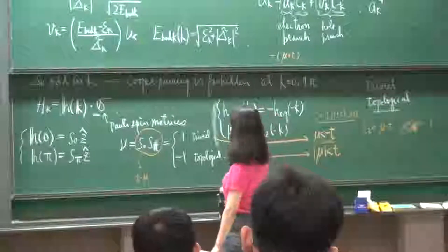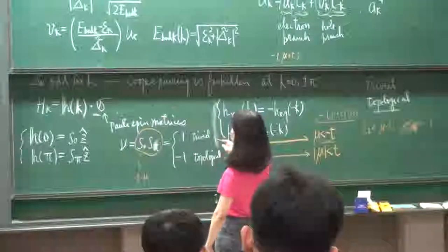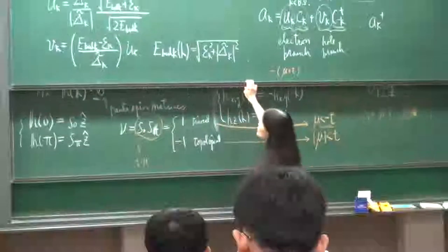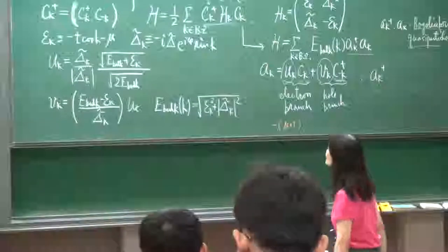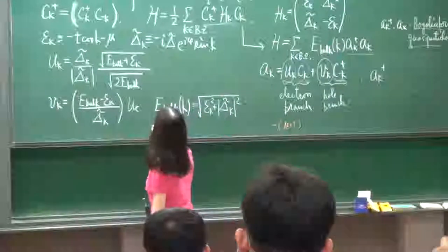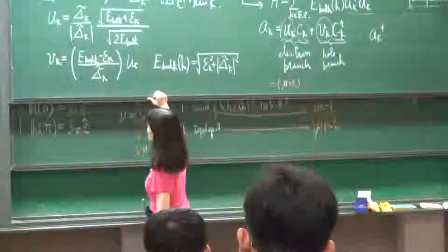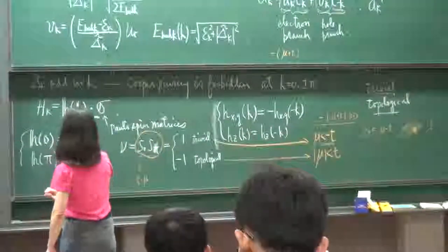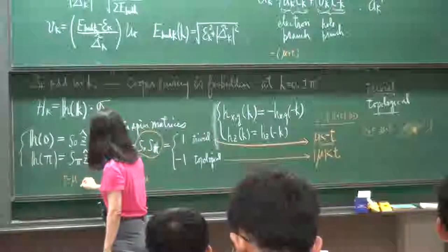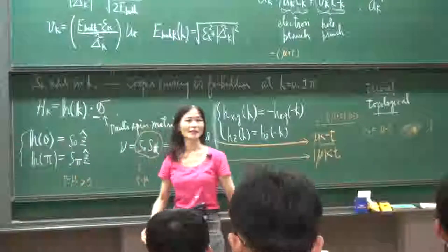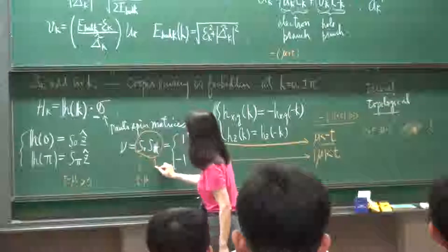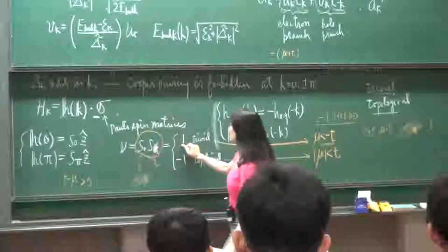So t minus mu — I want to determine whether this is positive or negative. This is positive, because t is positive and mu is smaller than minus t, so mu is negative, and so this is positive. So I have both positive and positive — that's 1, and this is trivial.